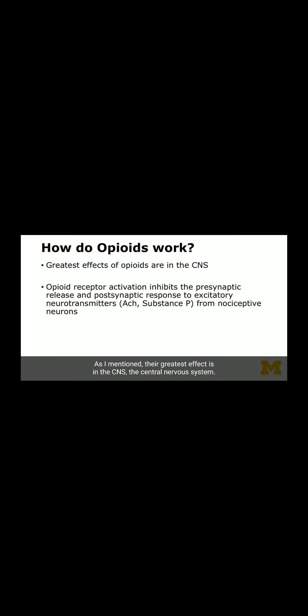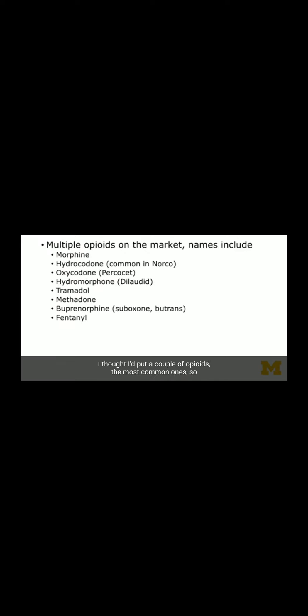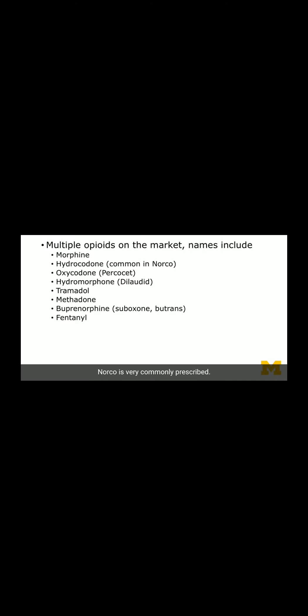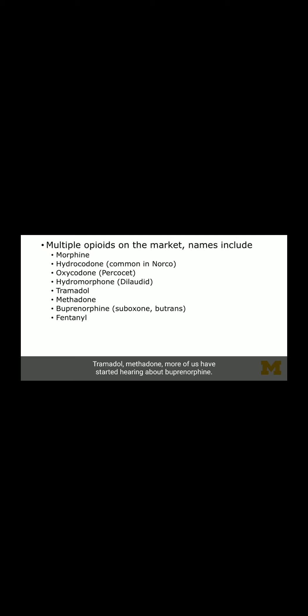Their greatest effect is in the CNS. Opioid receptor activation inhibits presynaptic and postsynaptic release of excitatory neurotransmitters, which attach to nociceptive neurons and cause excitation and pain impulses. The most common opioids include morphine, hydrocodone (Norco), oxycodone (Percocet), Dilaudid, tramadol, methadone, buprenorphine, and fentanyl — which has been commonly in the news because of the tragedies we've seen across the country.